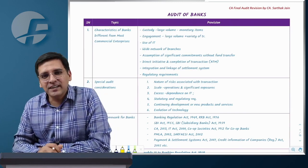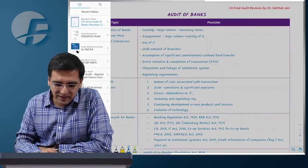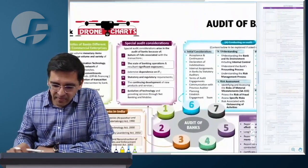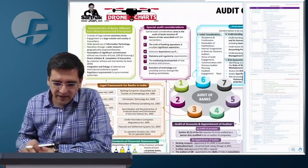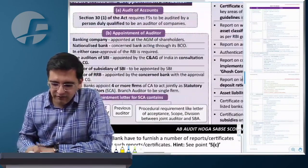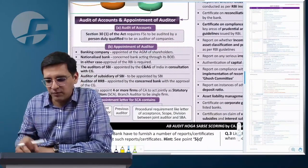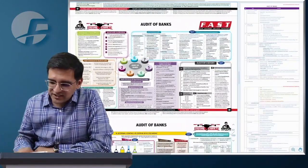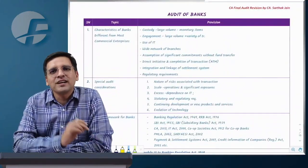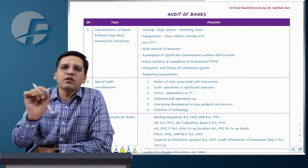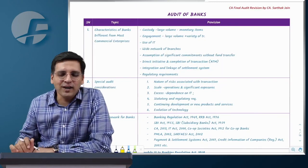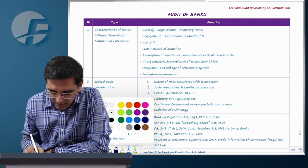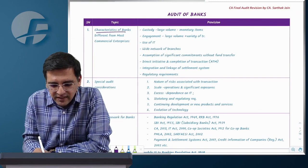First of all, how will the topics be given in the drone charts? We have systematically defined them in the charts. Essentially, in the Audit of Banks: what are the characteristics, the legal framework, the form of financial statement, who is the auditor, and who will appoint the auditor. The charts give you the advantage of connectivity. We will discuss short notes and individual topics from which you can read a question.